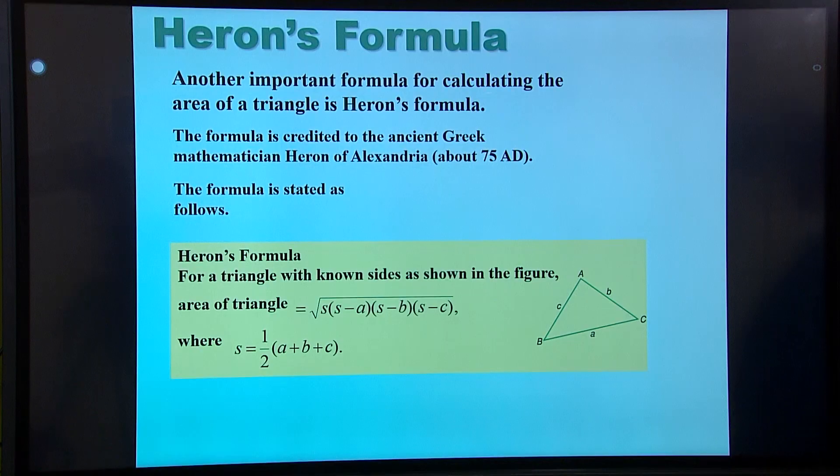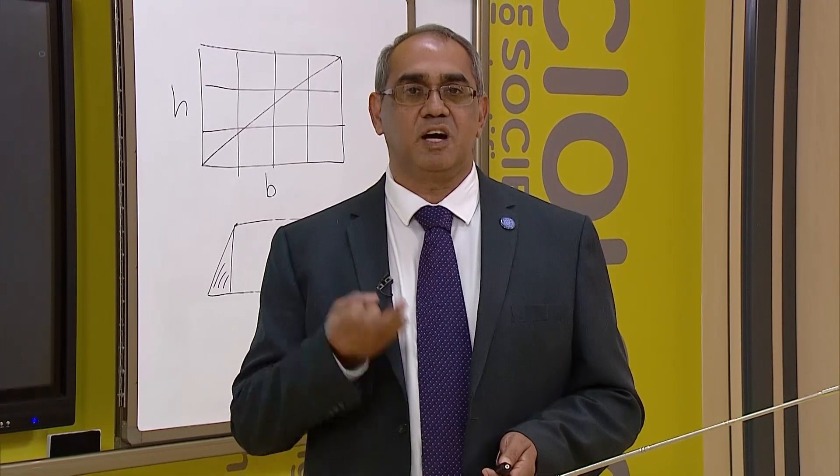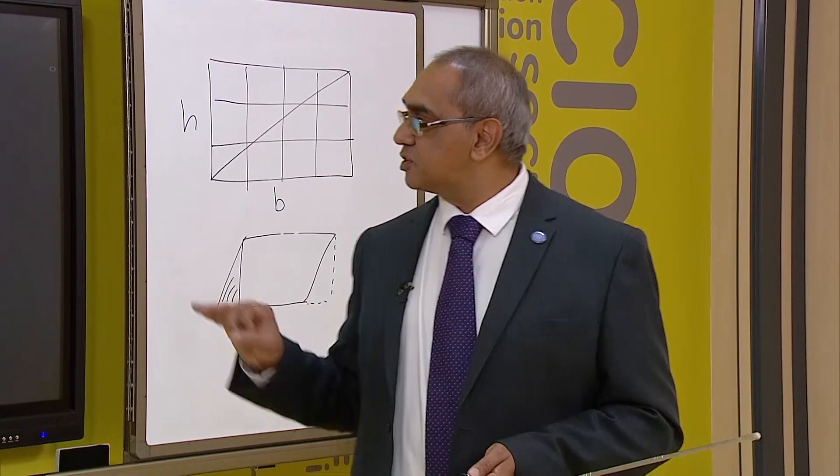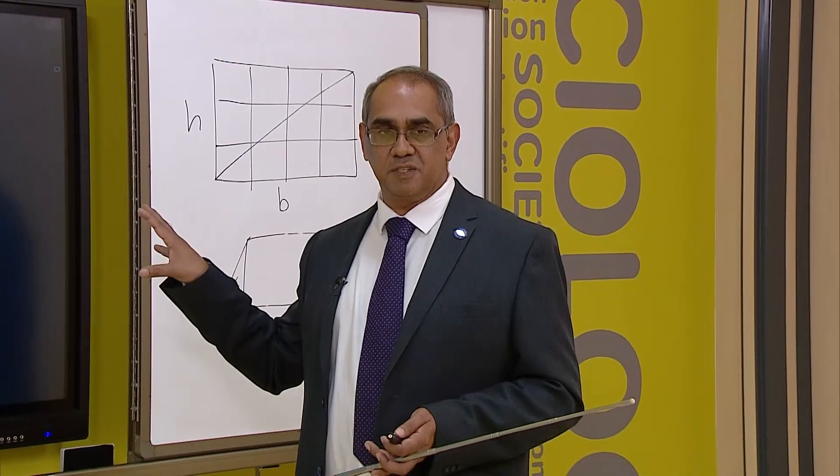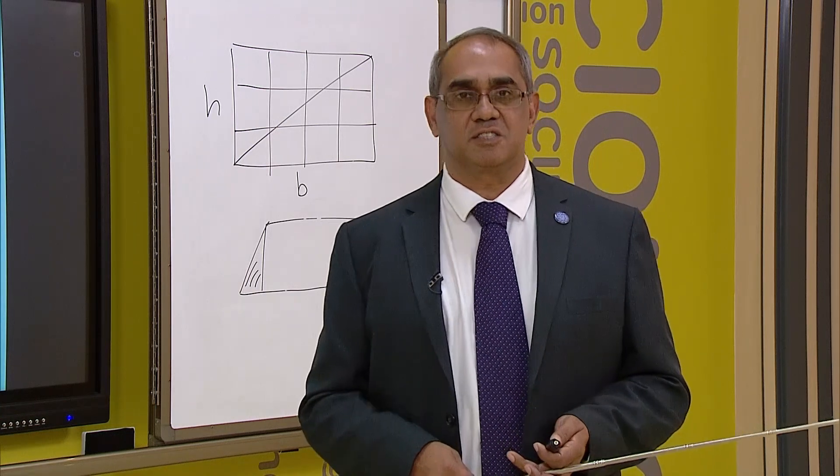So we have three formulas for the area of a triangle. Half a, b sine c, Heron's formula, and half a times h, half base times height. So three different ways to find out the area of a triangle. I hope that was beneficial to you guys. Thank you.